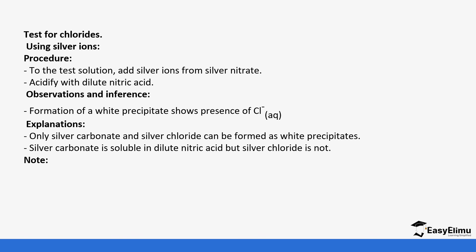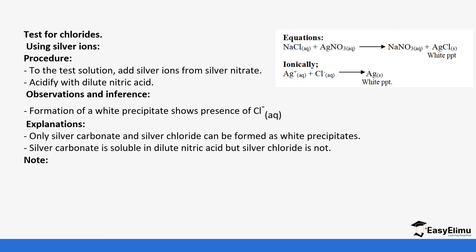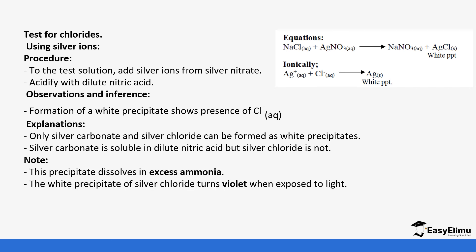We then follow with dilute nitric acid. If the white precipitate dissolves, the ions were carbonate ions; if the precipitate does not dissolve, it confirms chloride ions. For example, sodium chloride reacted with silver nitrate forms silver chloride — a white precipitate — and sodium nitrate. This silver chloride precipitate also dissolves in excess ammonia solution, and the white precipitate of silver chloride turns violet when exposed to light.